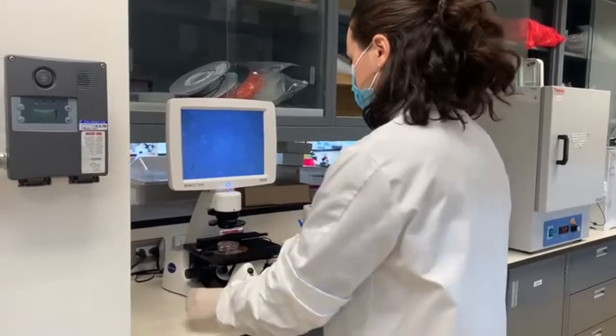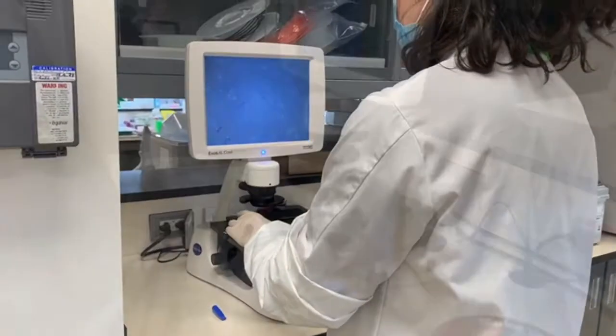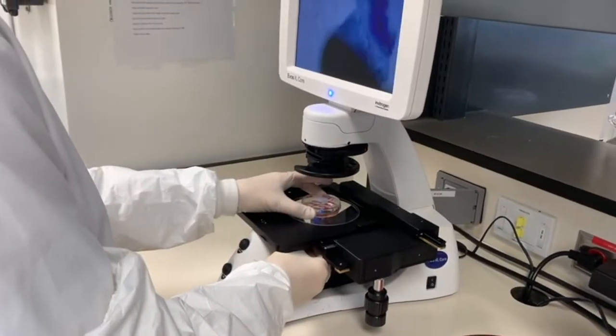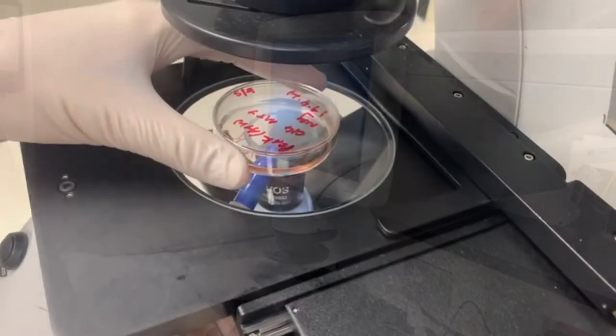Start by choosing a permanent marker to use for the procedure. Place the dish under the microscope and carefully put the pen under the dish and above the lens.